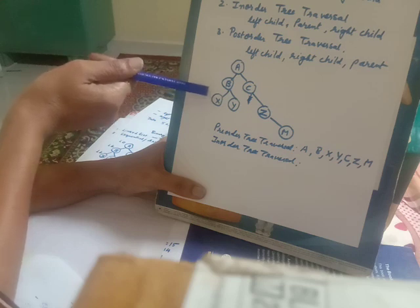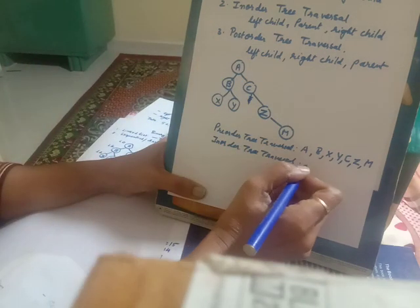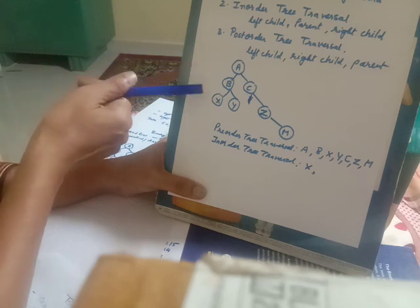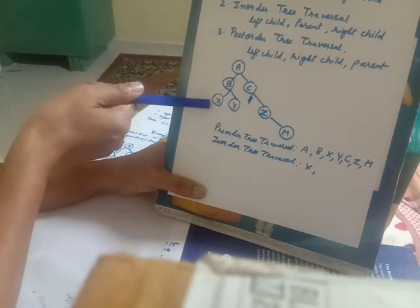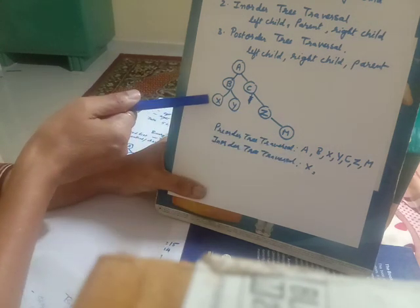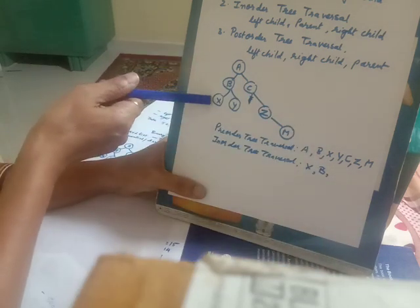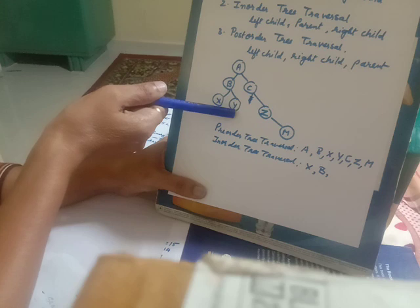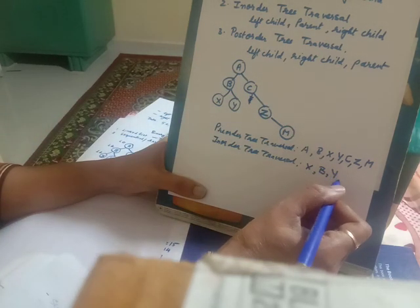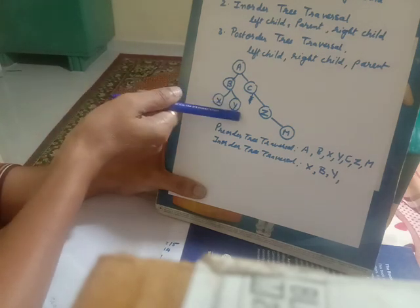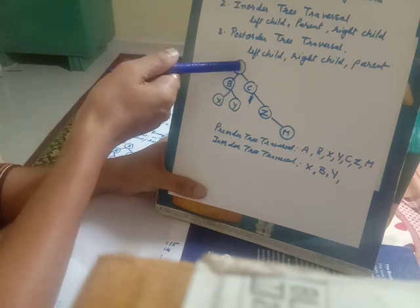With respect to X, there is no left child, so X is processed. In in-order traversal, we traverse from the root towards the left until we reach the leftmost leaf node. After processing leaf X, we process its parent B. Then we move towards the right child Y, which doesn't have children, so Y is processed. We have processed left child, parent, and right child. The parent of B is A, and since the left child is processed, now we can process parent A.